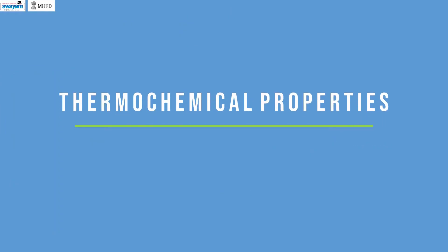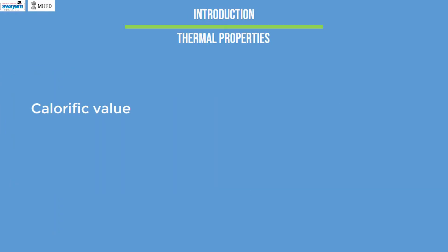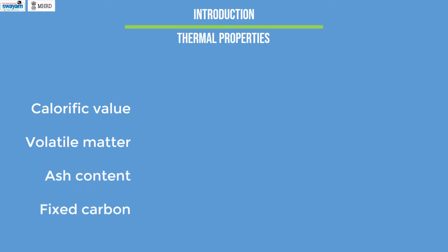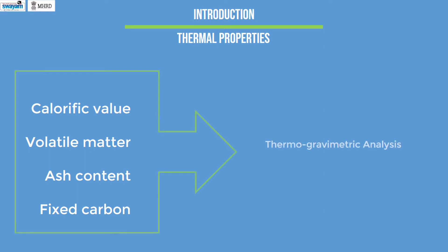The important thermal properties of biomass include the calorific value, volatile matter, ash content, fixed carbon, etc., which can be understood with the help of analytical chemical techniques such as thermogravimetric analysis and differential scanning calorimetry.